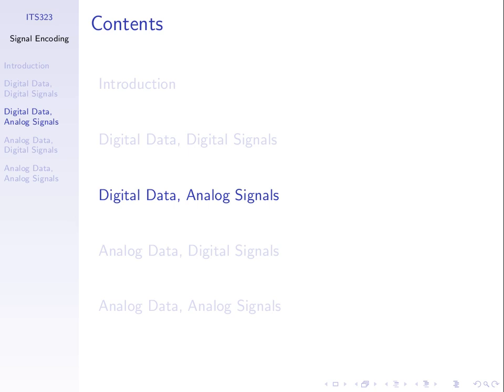Let's quickly look at what we covered on Monday. We covered digital data as digital signals — things like non-return to zero, Manchester encoding, and bipolar AMI. These are techniques for taking data and creating a signal. We finished with a short example on techniques for transmitting digital data as an analog signal, using a concept called shift-keying.